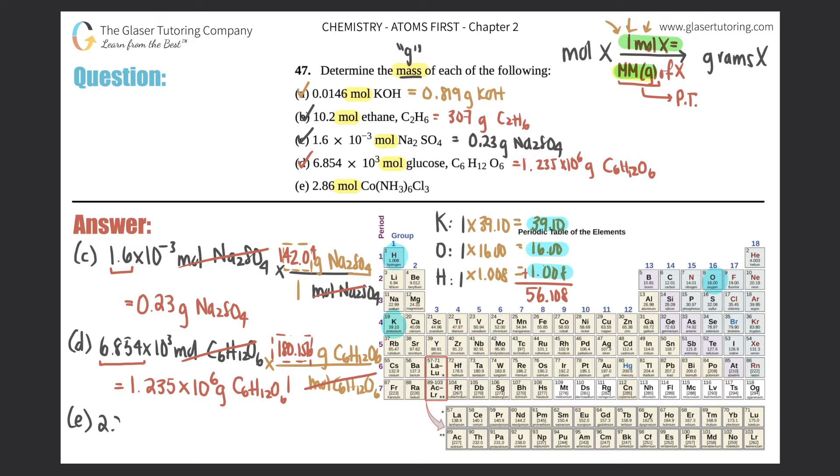Last but not least, I'll fit it down here. We got 2.86 moles of Co(NH3)6Cl3. Well, doesn't matter how scary that compound is, it's the same exact thing. Moles of Co(NH3)6Cl3 on the bottom, and then grams on the top. One mole is the weight on the periodic table.